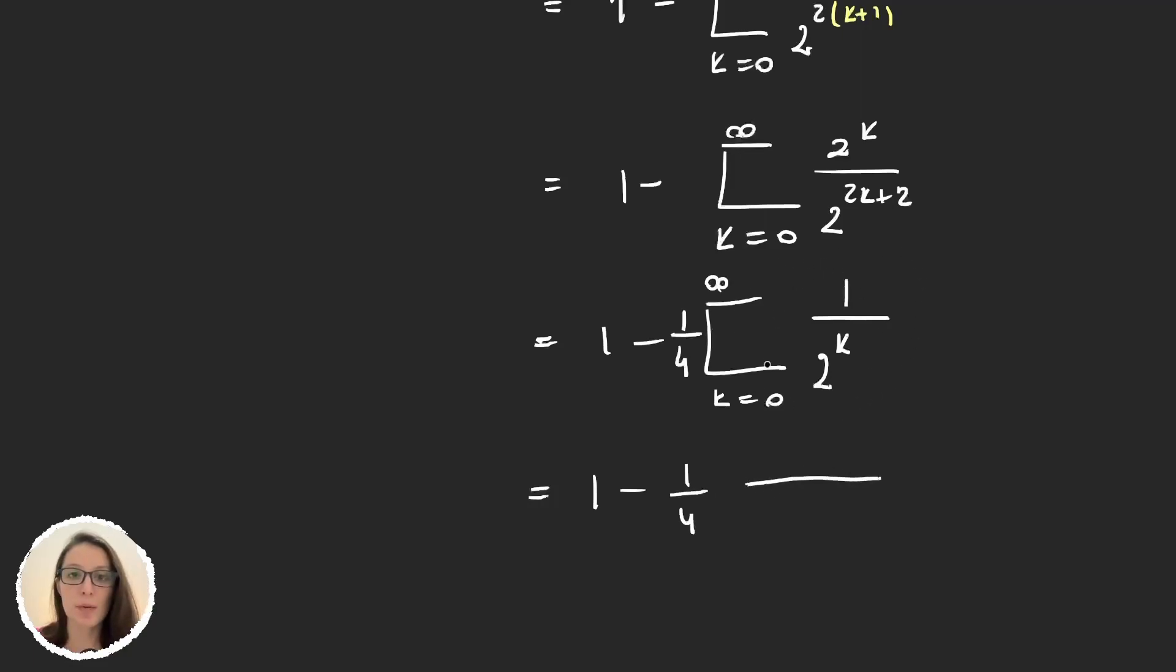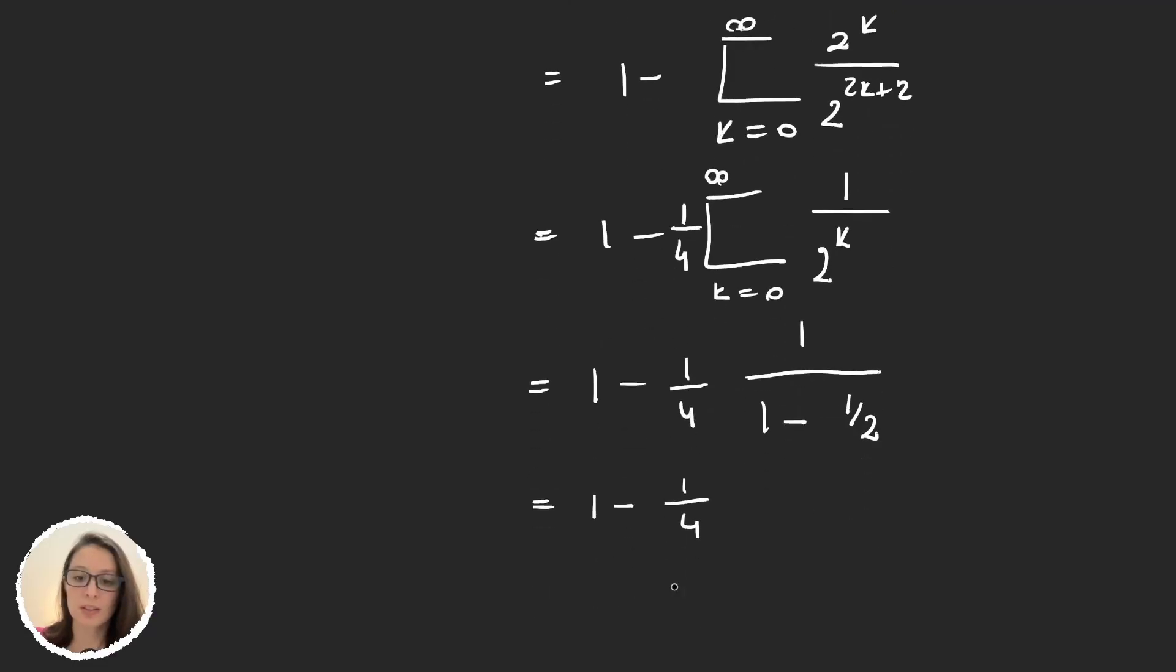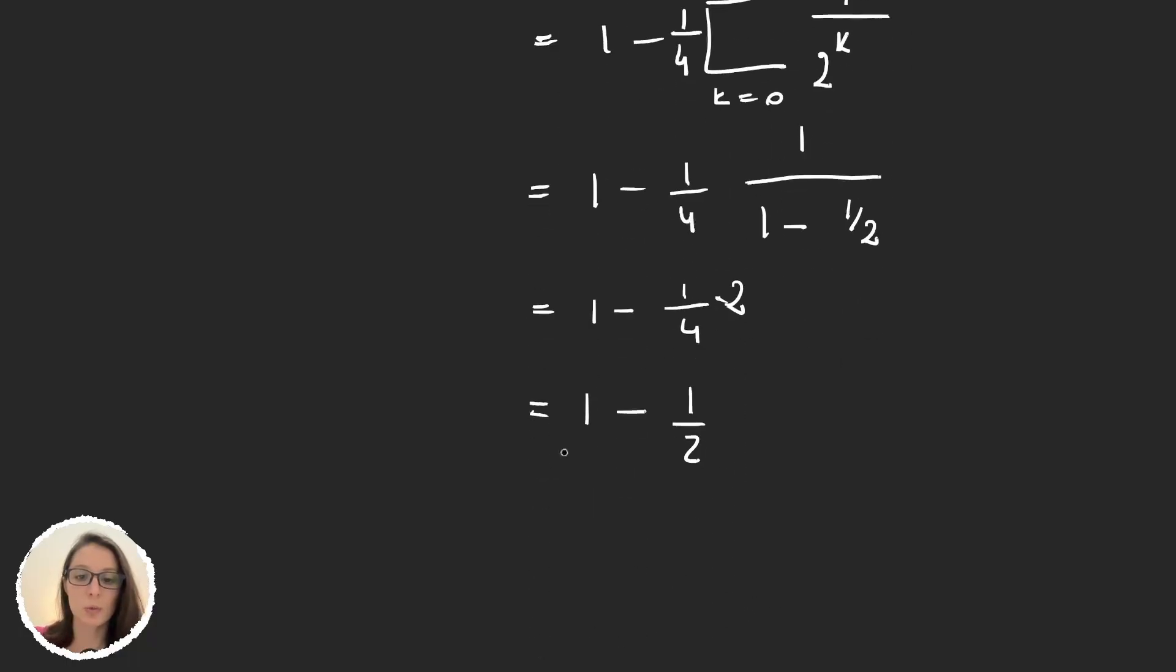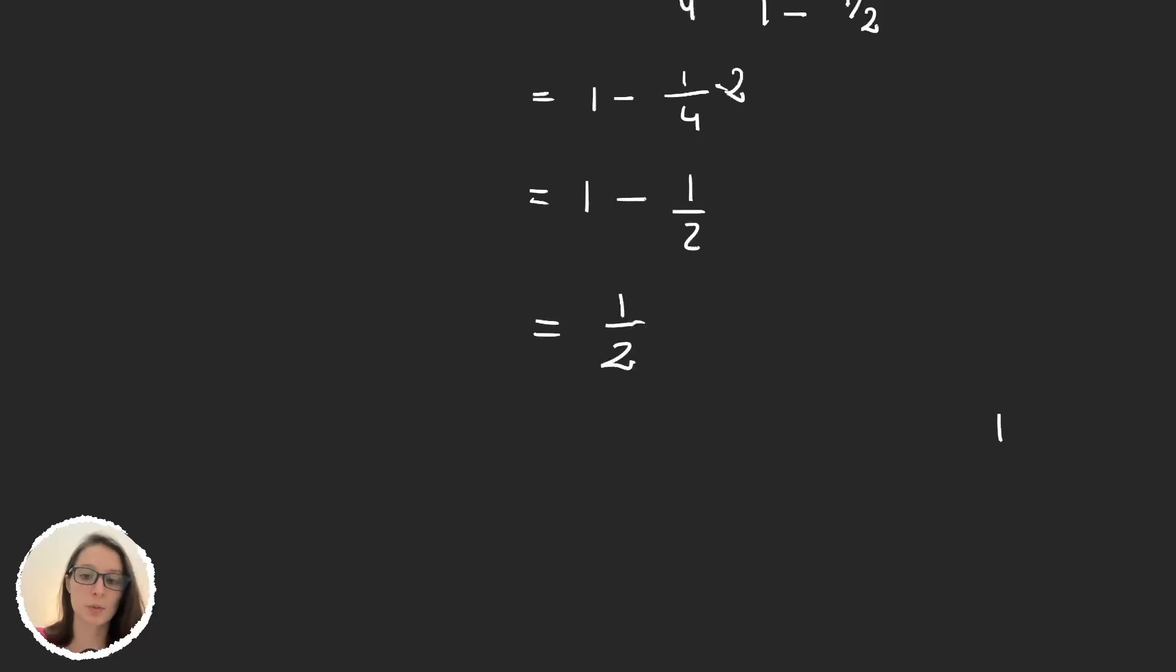So this gives us 1 - 1/4 times (1 - 1/2) is 1/2, and 1/(1/2) is 2. So this gives us 1 - 1/2. And that's it. So we were able to prove that the measure of F is 1/2.